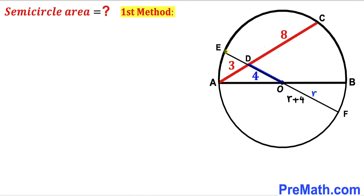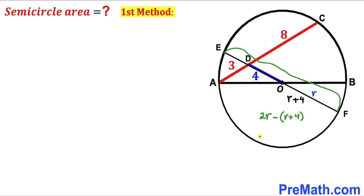Now we are going to figure out the tiny segment DE. This equals the whole diameter EF, which is 2r, minus segment DF which is r plus 4. Simplifying: 2r minus r minus 4, which gives us r minus 4. So the tiny segment DE is r minus 4.